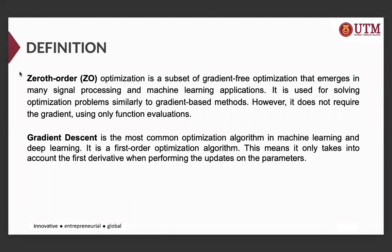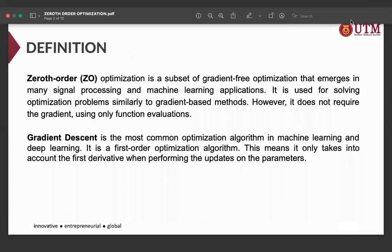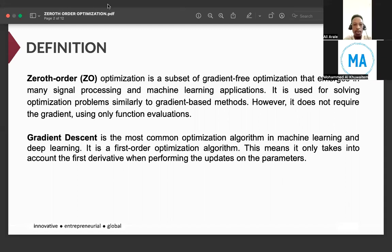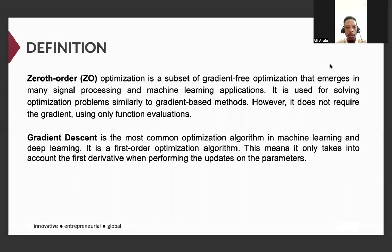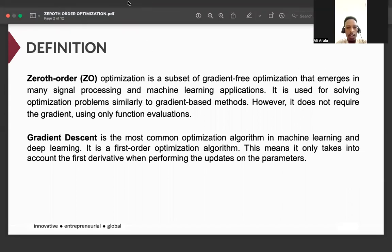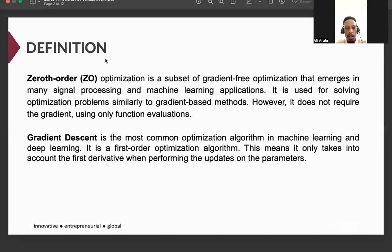Zero-order optimization is a subset of gradient-free optimization that emerges in many signal processing and machine learning algorithms. It is used for solving optimization problems similarly to gradient-based methods. However, it does not require the gradient, using only function evaluation. Gradient descent is the most common optimization algorithm in machine learning and deep learning. It is a first-order optimization algorithm. This means it takes into account the first derivative when performing updates on the parameters.